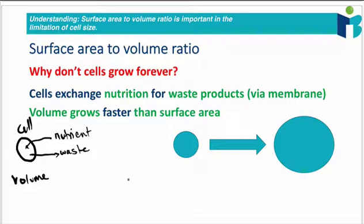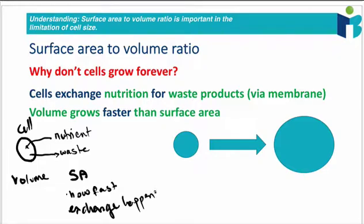The second thing you need to understand is that the rate, how fast these nutrients get in or the waste gets out, is 100% determined by the surface area. So the surface area of the cell determines how fast the exchange can happen. In order for a cell to be alive, the amount of nutrients that it requires, or the amount of waste that it needs to get rid of, has to fit with how fast the surface area can allow for this exchange to happen. If you're producing loads of bad stuff and you can't get rid of it fast enough, the cell is not going to survive.